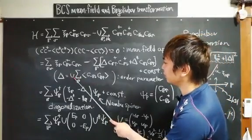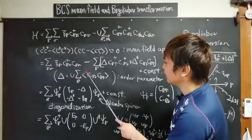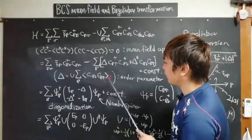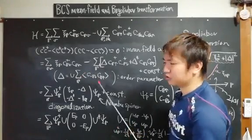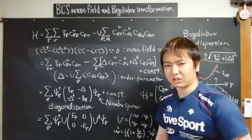Here U is the coupling constant. Now the important point is this is proportional to the expectation value of the off-diagonal term.